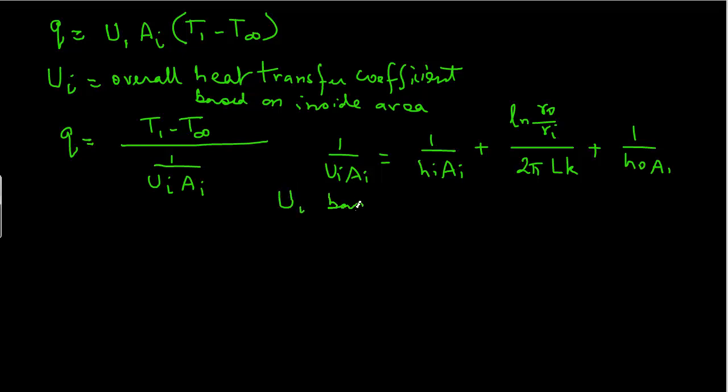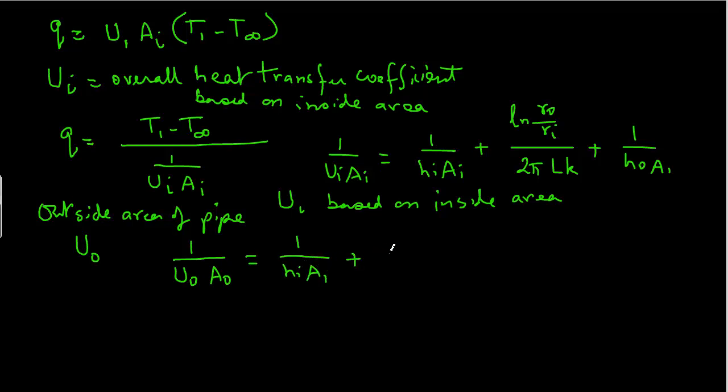The one thing you will notice is that we defined our overall heat transfer coefficient Ui as based on inside area. So the selection of this area to calculate overall heat transfer is actually quite arbitrary. For example, if we were to use the outside area, then instead of writing Ui, we will be writing Uo. And Uo will be the overall heat transfer coefficient that is based on the outside area. In that case, the expression will be 1 over Uo Ao equals 1 over Hi Ai plus natural log of Ro over Ri divided by 2π LK plus 1 over Ho Ao. So as you will notice on the right hand side, the items are exactly the same in both cases.